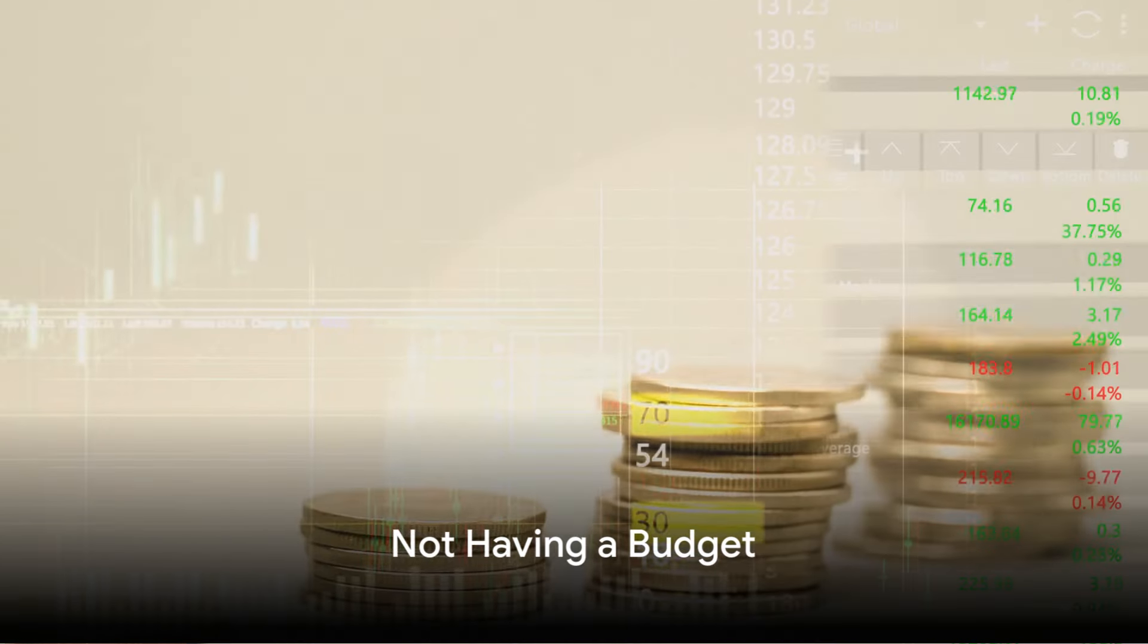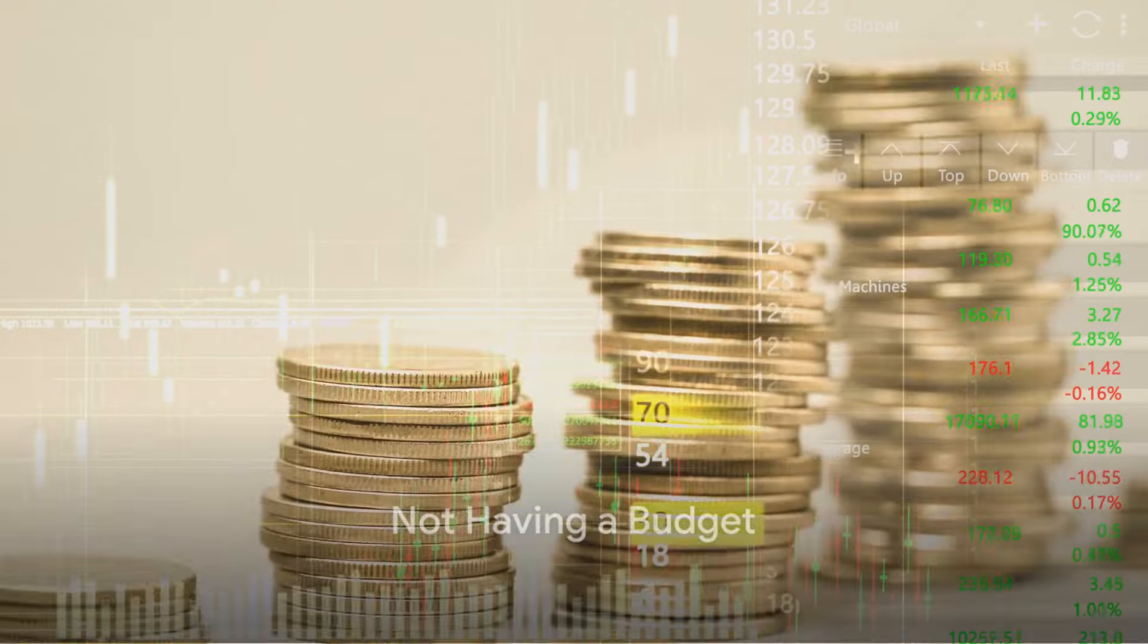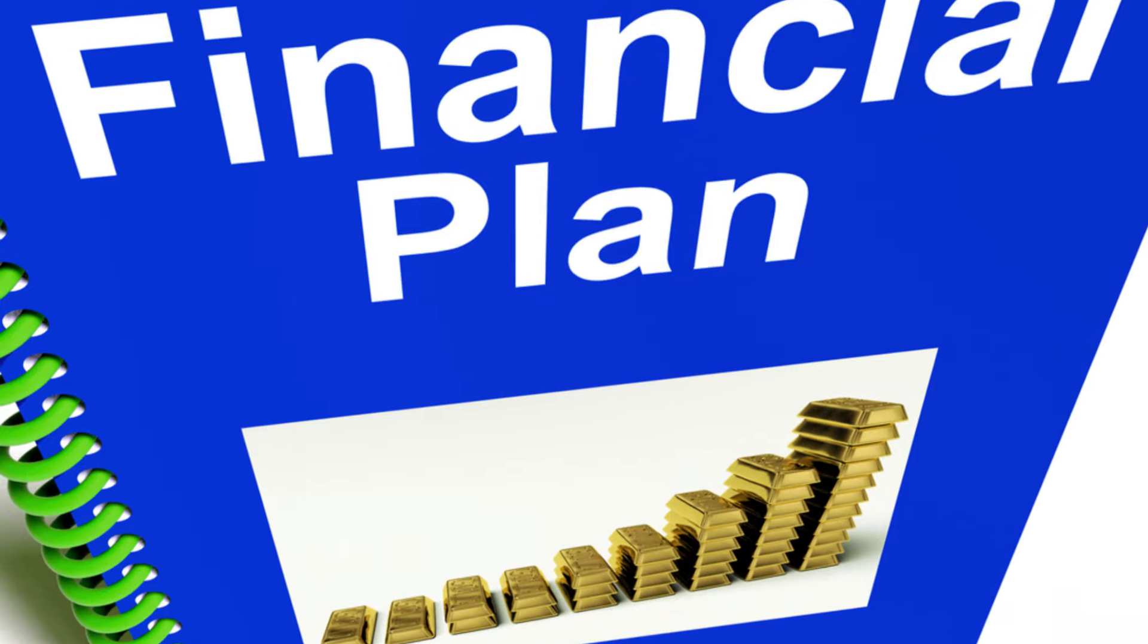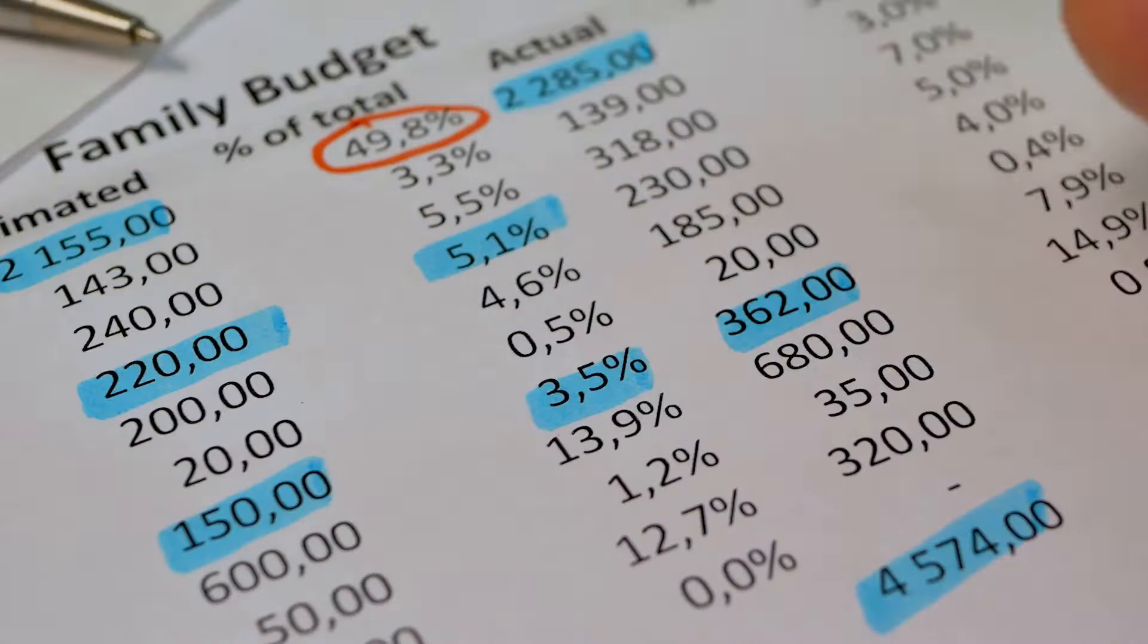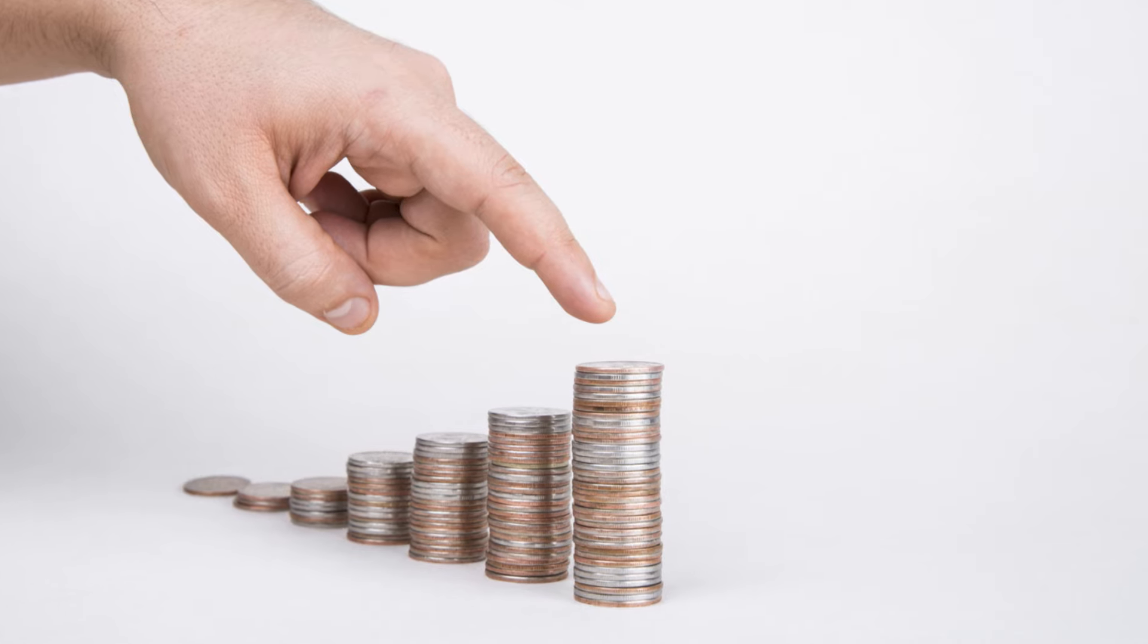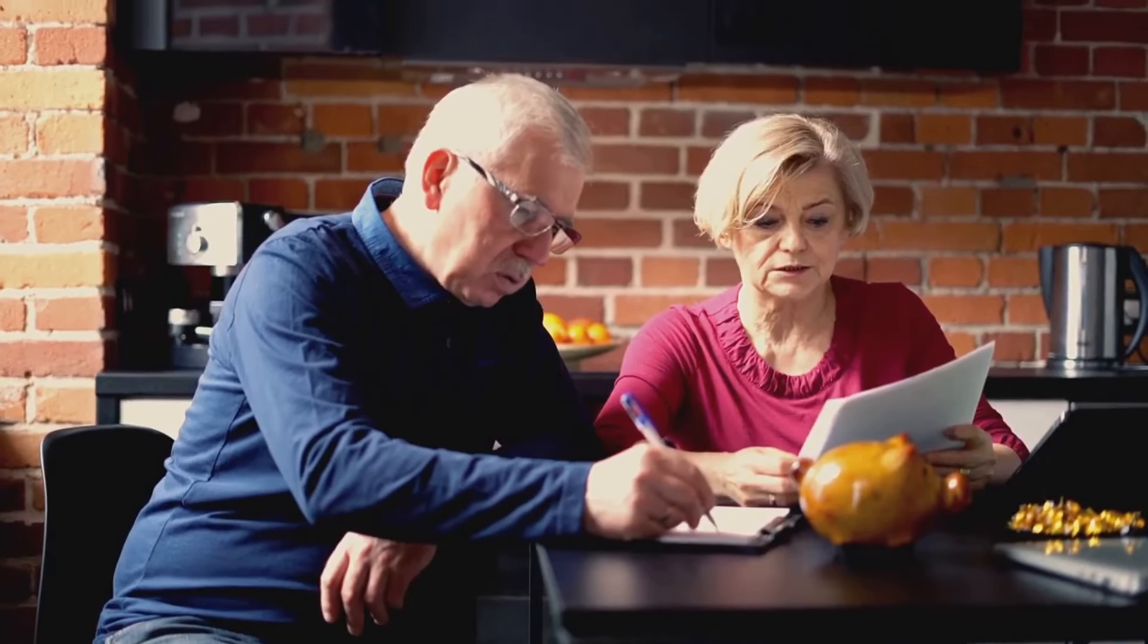Mistake number three, not having a budget. Think of your budget as a financial roadmap. It's a guide that shows you where your money is coming from, where it's headed, and how you can ensure it's being used efficiently. Without it, you're essentially driving blind. So, how do you create a budget?